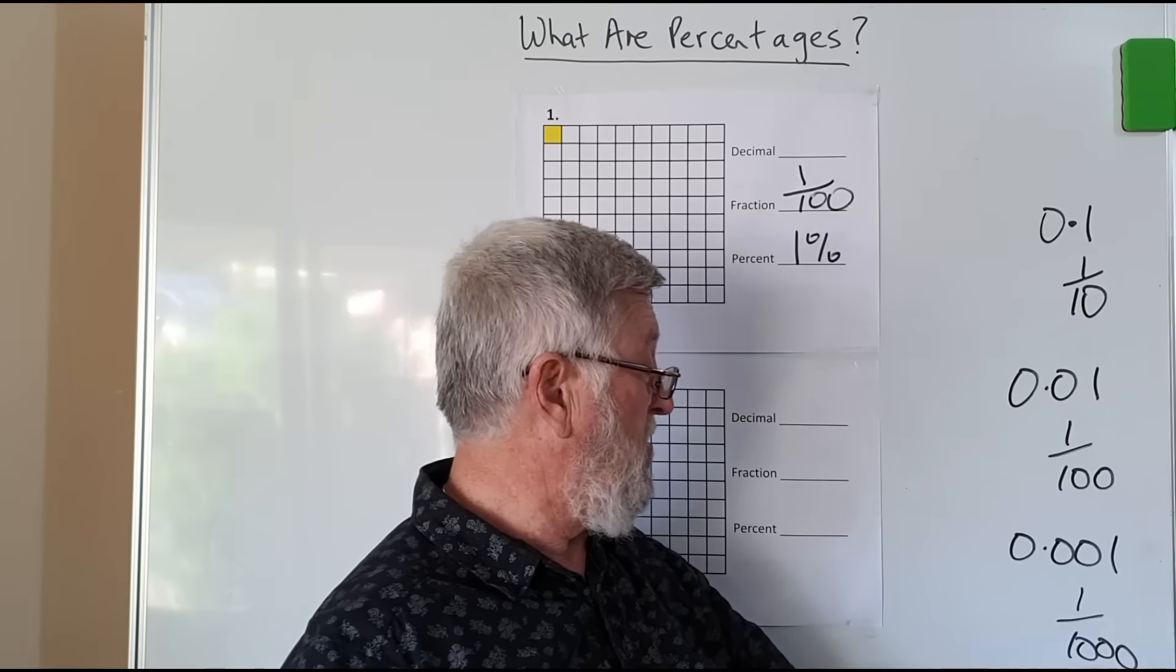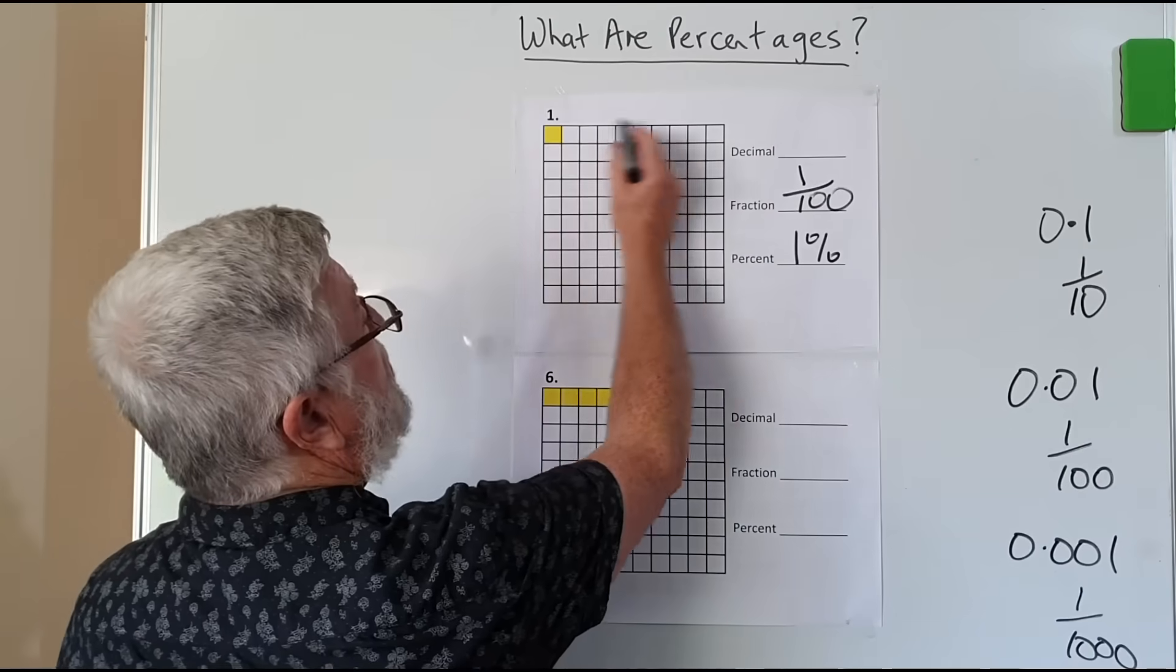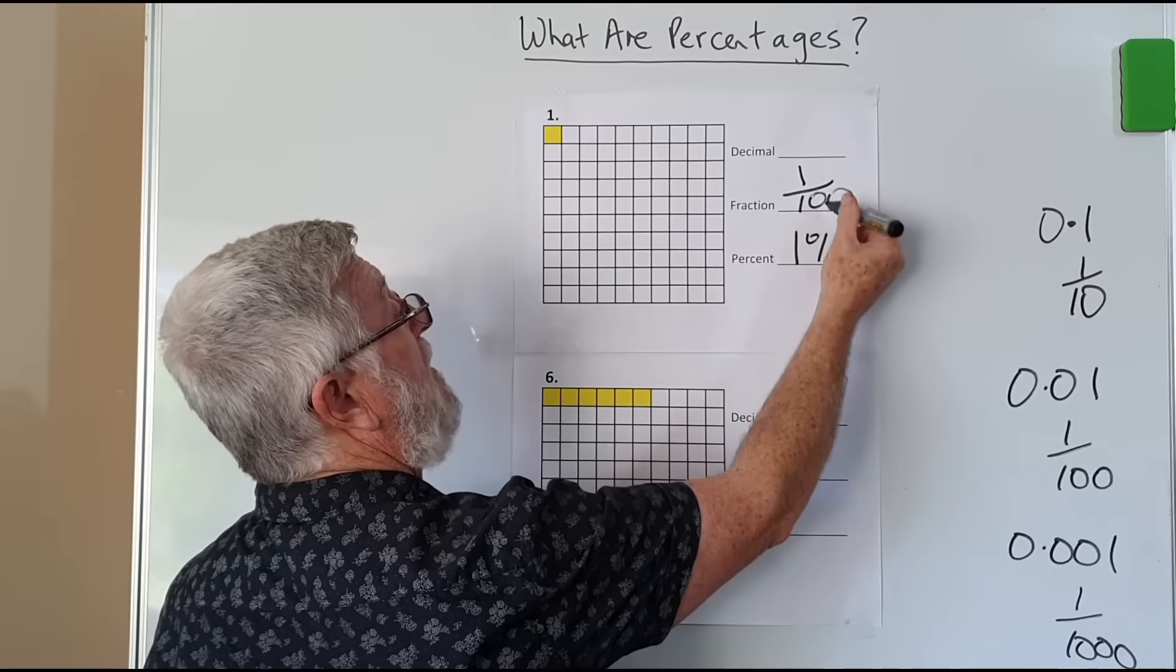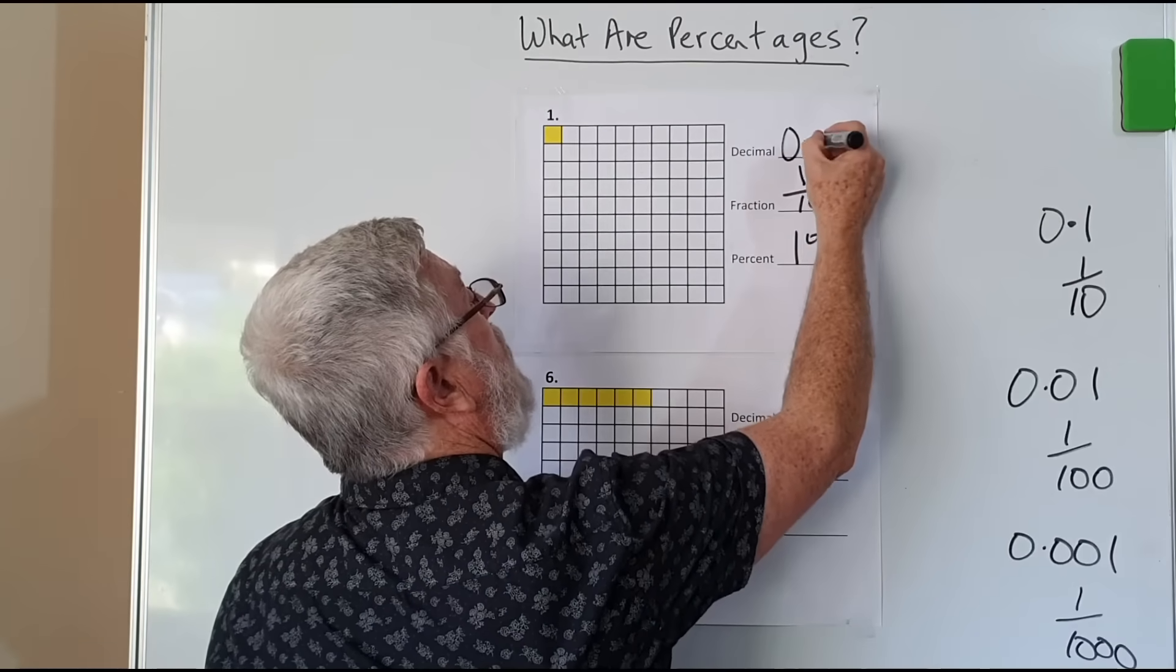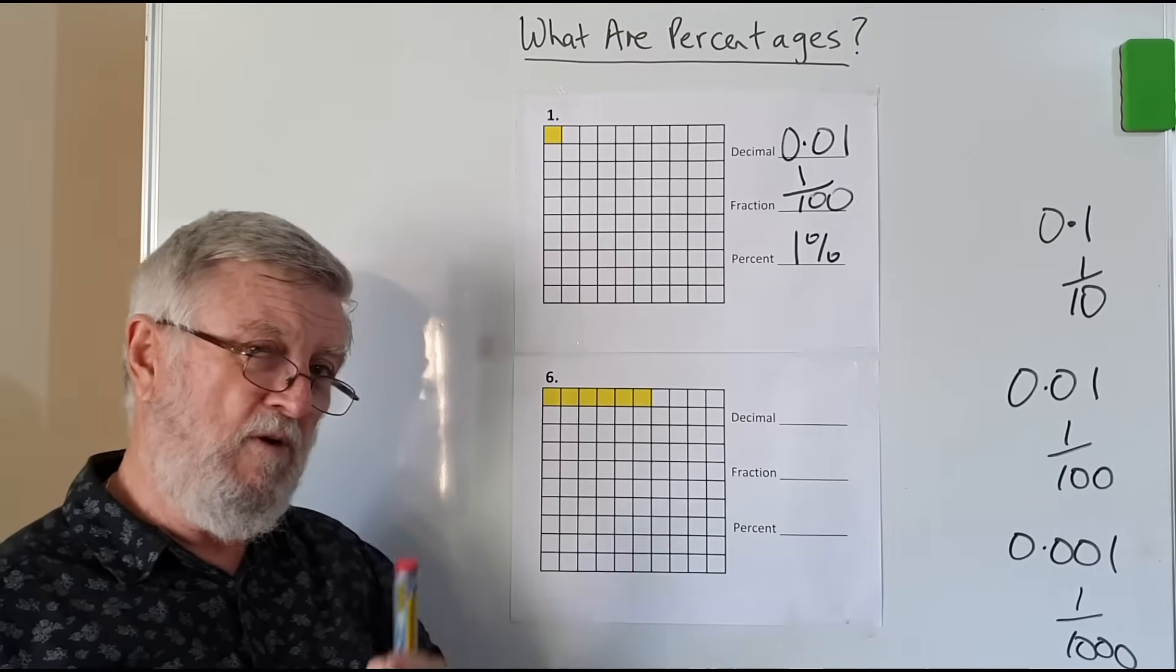Two decimal places means you're talking about hundreds, or you got two zeros. Three decimal places means you're talking about thousands, or you're talking about three zeros. So let's apply that to this: one colored square out of a hundred is one percent. That means the same as one out of a hundred, and if we write it as a decimal, it's 0.01.